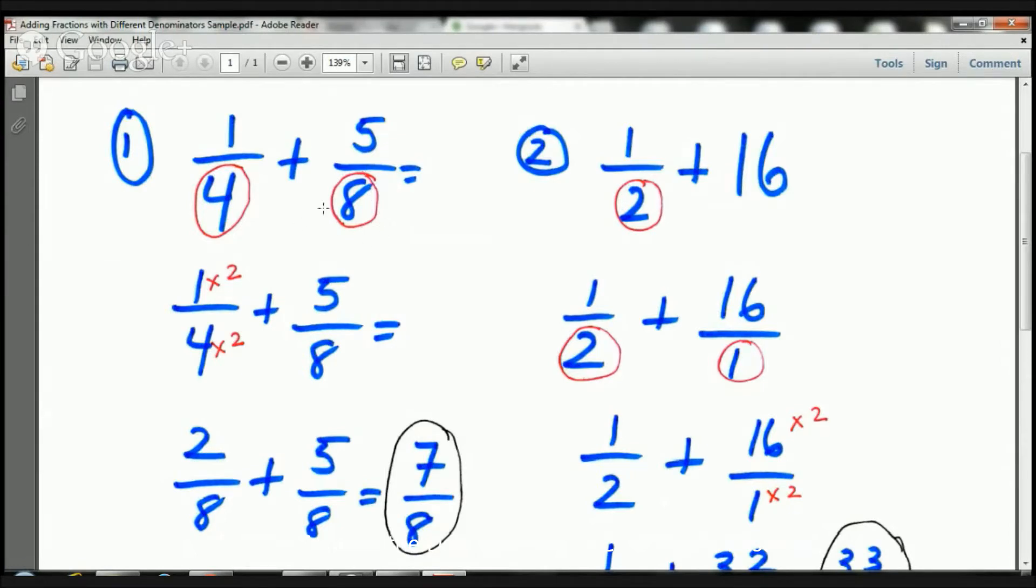I look at the 8, which is the larger number, and then I ask myself, can 4 go into 8? Ah, it can. How many times? 2 times. 4 times 2 is 8. So, I'm going to multiply this 4 here by 2. If I multiply the bottom by 2, I have to multiply the top by 2. Let's take a look and see what that's going to look like.